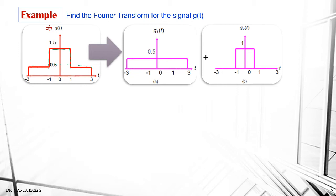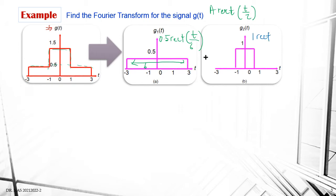To use Fourier transform, refer to the table for the rectangular function. The basic equation of a rectangular function is A·rect(t/τ), where A is the amplitude and τ is the width. For the first signal g1(t), the equation will be A·rect(t/τ) where the width τ is 6. For the second signal g2(t), A is 1 and the width τ is 2.